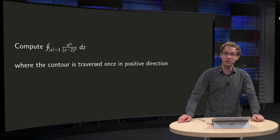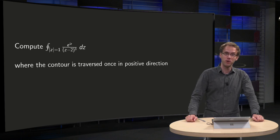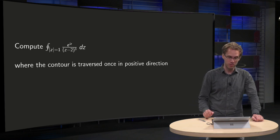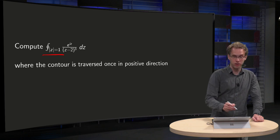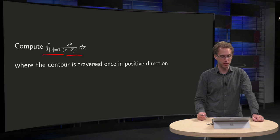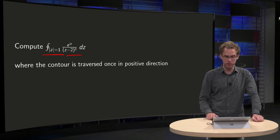Try to compute the following integrals yourself first, and then you can see in this video whether your computation is correct and whether you have included all steps. So we have the following integral: a contour of z equals 1, e to the power iz divided by z minus 2 cubed, where the contour is traversed once in a positive direction.